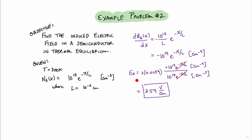It is important to note that when we have a distribution of carriers that is an exponential profile, we're going to get a resulting constant electric field across that device. And with that, this concludes this video of Unwired Learning. We'll see you next time!